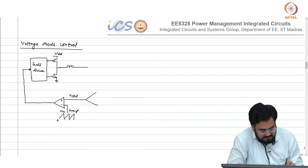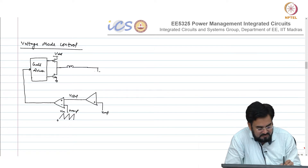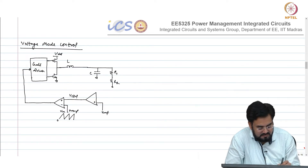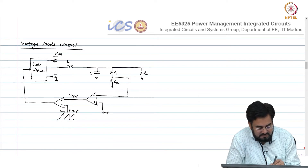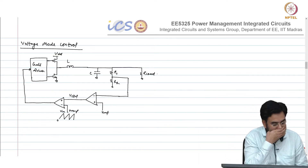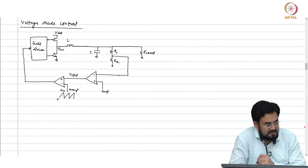Let me draw a simple op-amp amplifier with Vref and the feedback resistors R1 and R2 along with a capacitor. This will give your beta factor. We also have Rload connected, and this is your VSW switch node output.